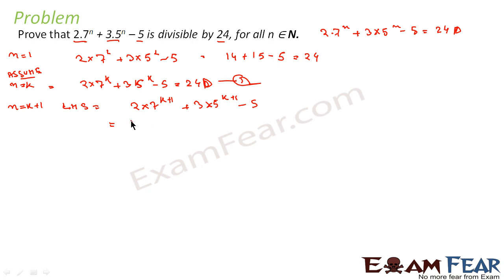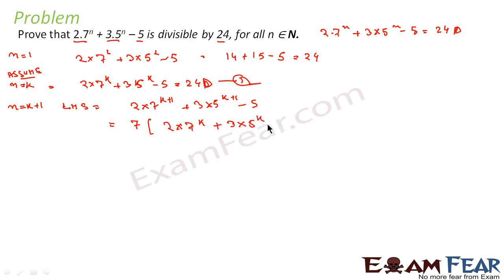Here we take 7 common, giving us 7 into 2 into 7 to the power k. We wanted the expression 2 into 7 to the power k plus 3 into 5 to the power k minus 5, so we add and subtract it. We write plus 3 into 5 to the power k minus 5, then subtract minus 3 into 5 to the power k plus 5.